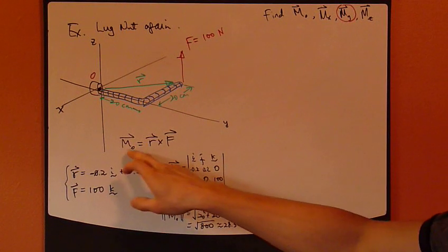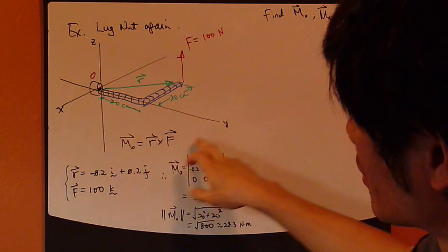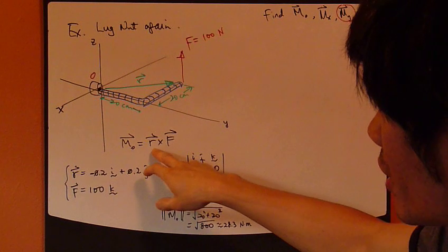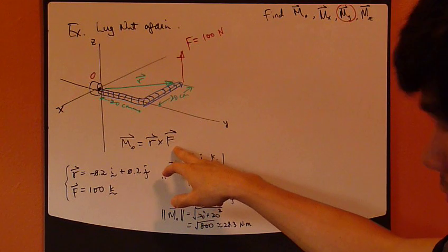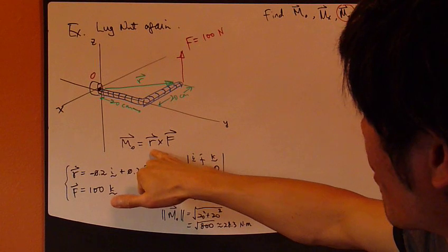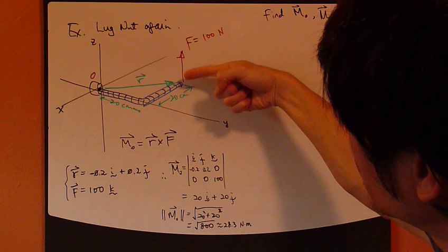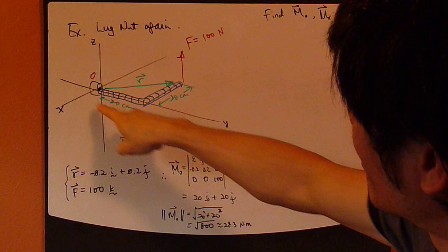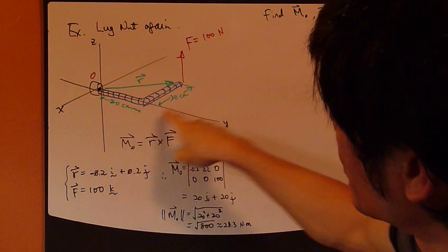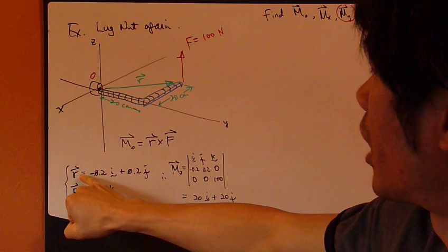Okay. First, let's start with moment about point O. Okay? So, let's write down the general equation, which is R cross F. Okay? So, let's go through the calculation. So, R vector is measured from point O to this point right here. Now, since the dimensions are given, now 20 and 20. So, write down the R vector,